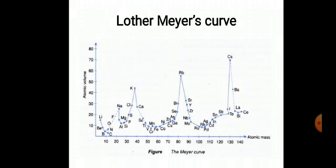In this graph, the elements are arranged and curves are formed. These curves are always showing which elements are present at the top position of the curve — at the highest point of the curve. These elements have larger atomic volume and occupy the top position at the highest point of the curve.